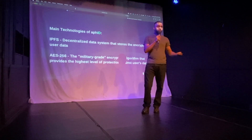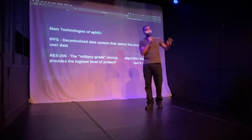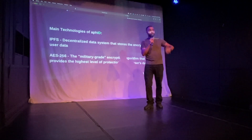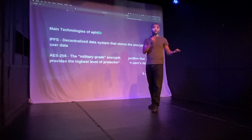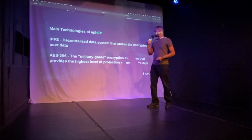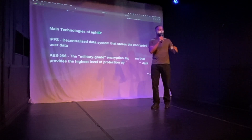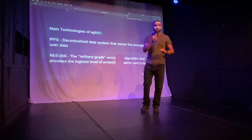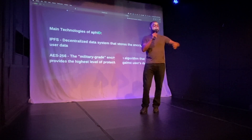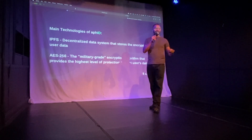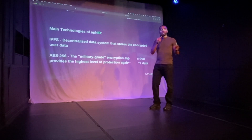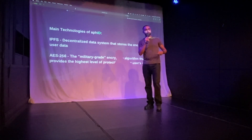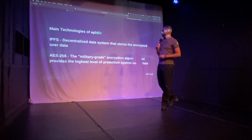That means people at home like me and you are running machines that store the data — encrypted — meaning they cannot see your data the way Facebook and other companies can. They're running a node at their house, storing information within the network. The data stays with the people, not a central authority. Because it's encrypted, those node operators cannot see the actual data — only you can access it, signing in with your AFID using a mnemonic phrase or password, and we use military-grade encryption as well.